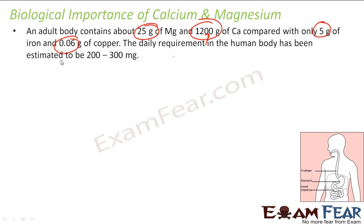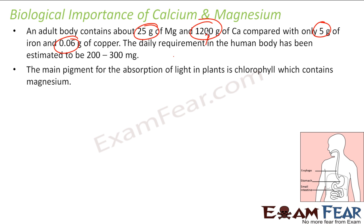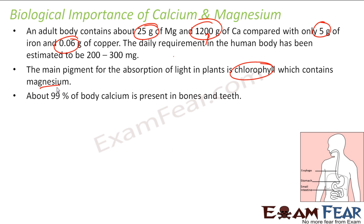So calcium and magnesium intake is more. If you see chlorophyll, the main composition is magnesium. And if we talk about the teeth and bones, 99% is calcium.